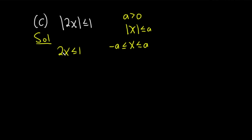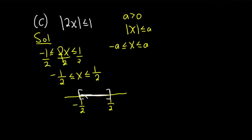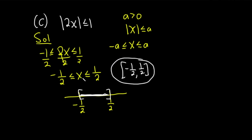So we drop the absolute value and get negative 1 less than or equal to 2x less than or equal to 1. I always think of it as less than, less than — then just divide by 2. This gives negative one half less than or equal to x less than or equal to one half. This type of inequality comes up a lot in calculus. We can draw a picture: on the number line, it's everything between negative one half and one half. Because we have an equal to part, we use brackets. The answer is bracket negative one half to one half bracket.